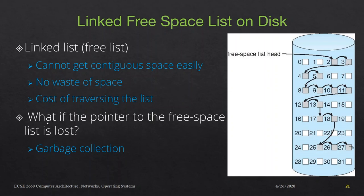An important question is: what if the pointer to the free space list is lost — that is, the pointer to the first free block itself is lost? We can perform garbage collection, which searches the entire directory structure to determine which blocks are already allocated. The remaining unallocated blocks can then be relinked as the free space list, rebuilding it even if the head pointer was lost.